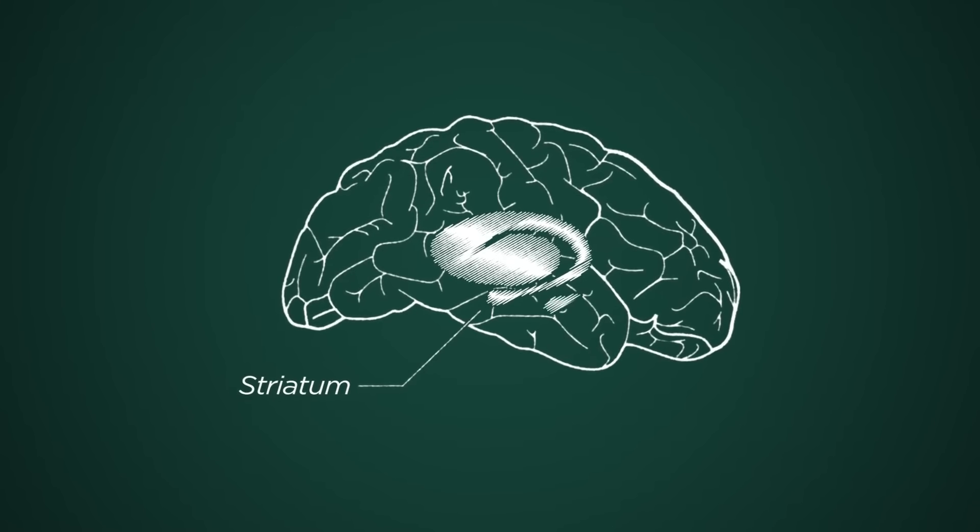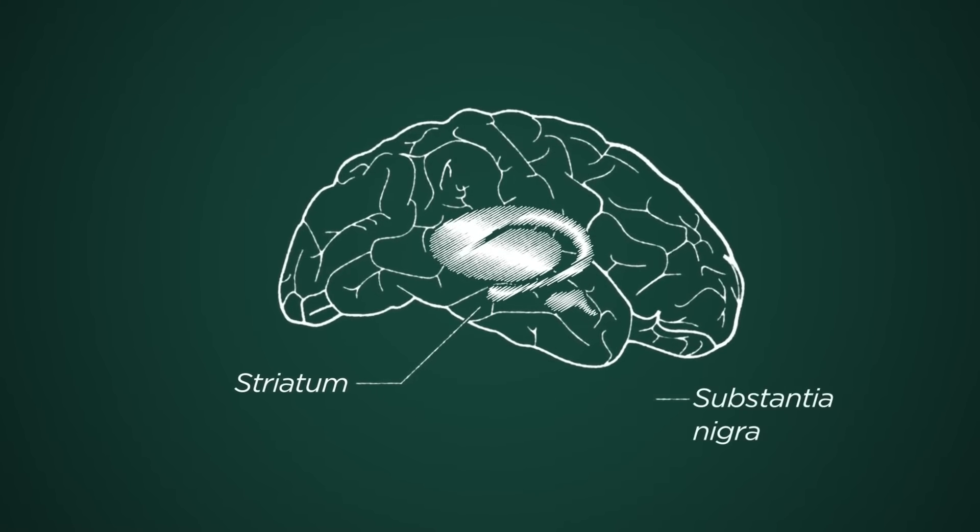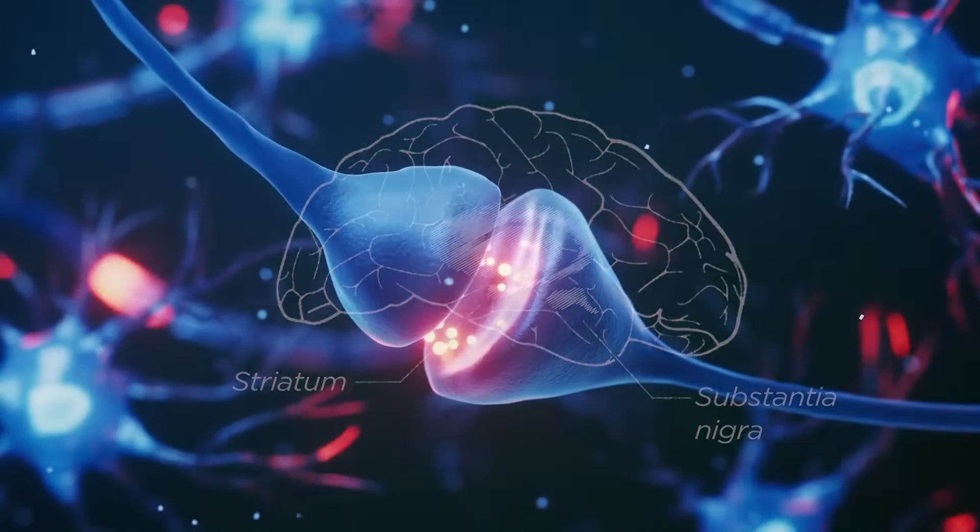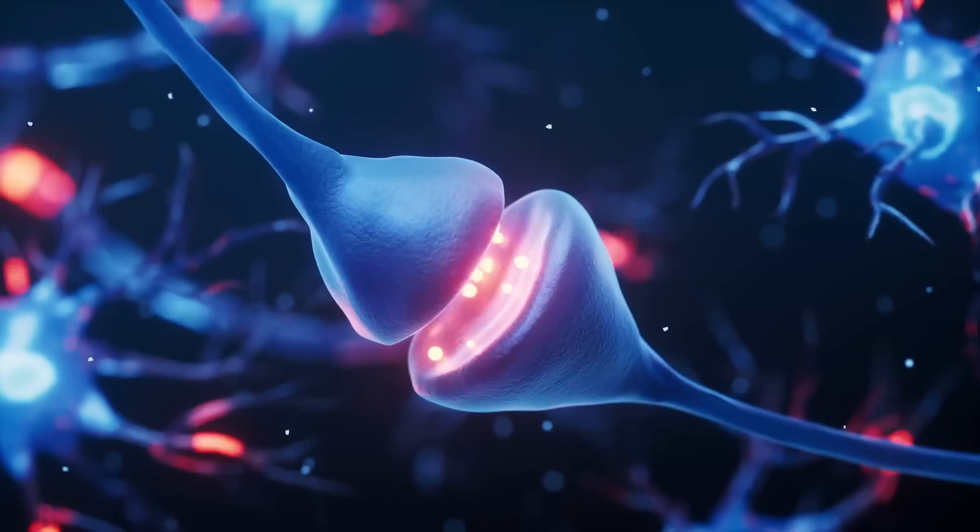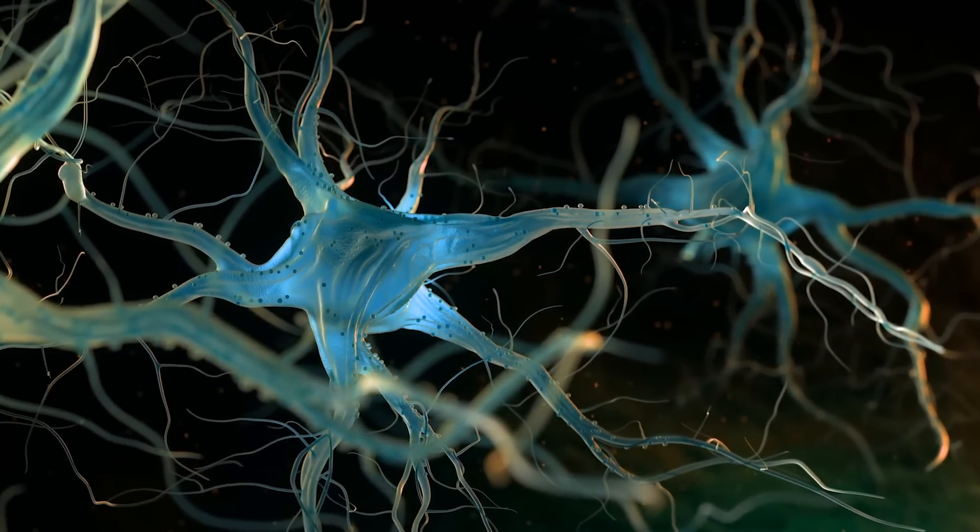So the area of the brain that dies off in Parkinson's is back in your midbrain. It's called the substantia nigra. Those neurons contain a chemical called dopamine. Those neurons send little projections up to the striatum.